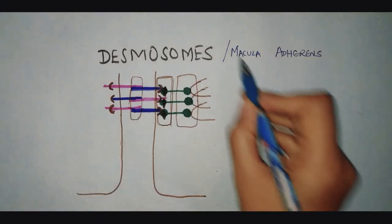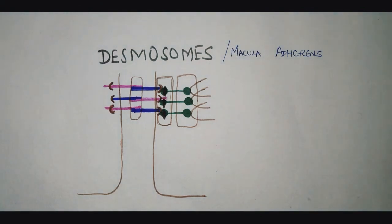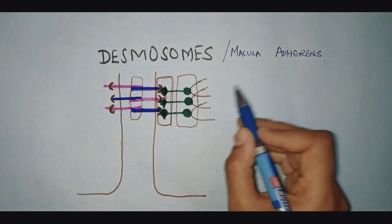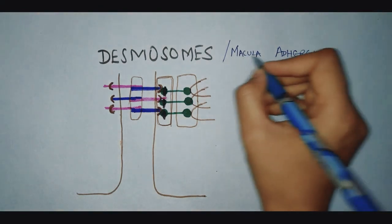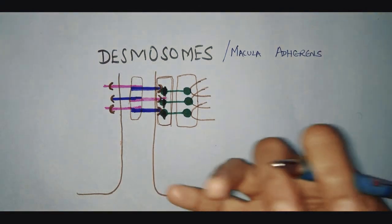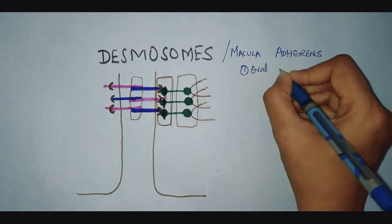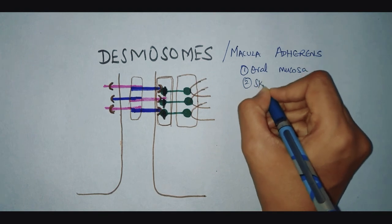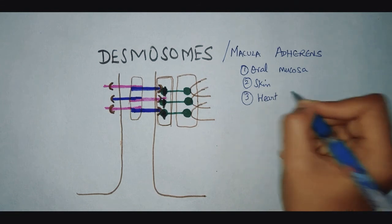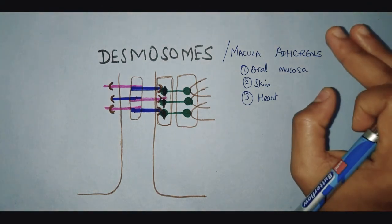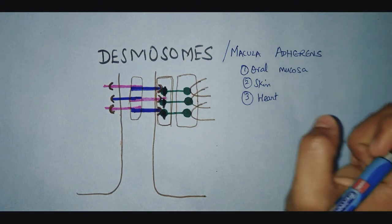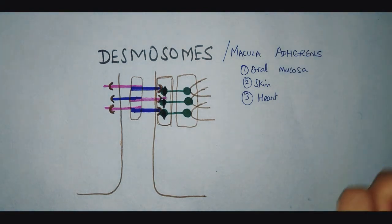Let us see about desmosomes, otherwise called macula adherens. As we have seen, macula means spot-like, while zonula is belt-like, so they are spot junctions. Desmosomes are situated in tissues subjected to increased mechanical stress or physical forces — they are present in the oral mucosa, skin, and heart. These junctions mediate cell-to-cell adhesion and cytoskeletal linkages, integrating cells within tissues mechanically so that tissues can resist mechanical forces.